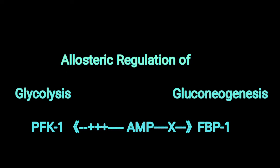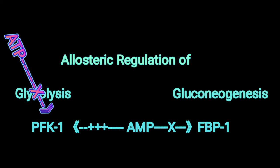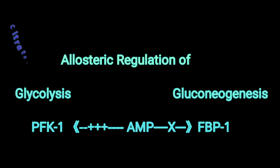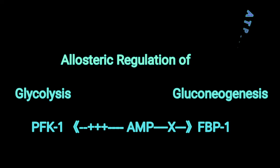Other allosteric regulators of both glycolysis and gluconeogenesis are ATP and citrate. ATP and citrate are both indicators of a high energy status in the cell. Both of these molecules can allosterically inhibit PFK1. On the other hand, high levels of ATP will activate gluconeogenesis by activating fructose 1,6-bisphosphatase.